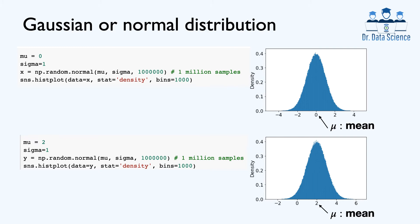Now let's change the mu parameter, which is the mean of the distribution, and see how that changes the distribution plot. Instead of np.random.randn I'm using np.random.normal because we want to use a Gaussian distribution with different values of mu and sigma. We are generating 1 million samples with sigma equal to 1 and then changing mu — one time mu is equal to 0 and then mu is equal to 2. As we can see, in the top figure all the samples are centered at 0, and in the bottom figure all the data points are centered at 2, which is exactly consistent with changing the mean value.